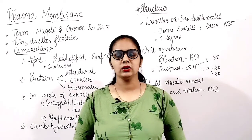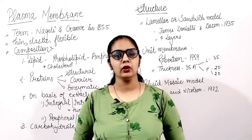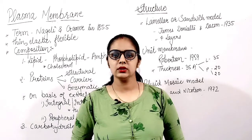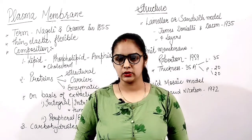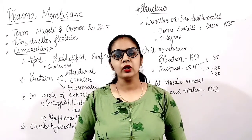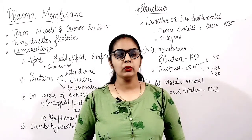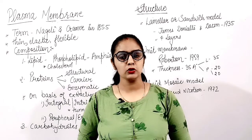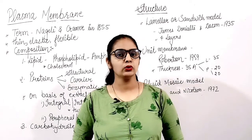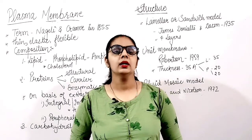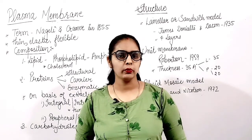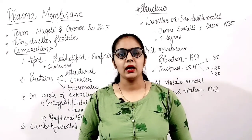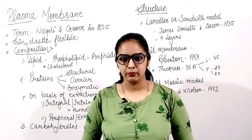A eukaryotic cell is a cell which has a true nucleus and all the cell organelles. First, if we talk about cell organelles, the first is the outer membrane — the protective membrane that is known as the plasma membrane.